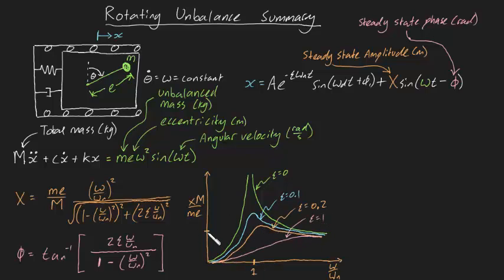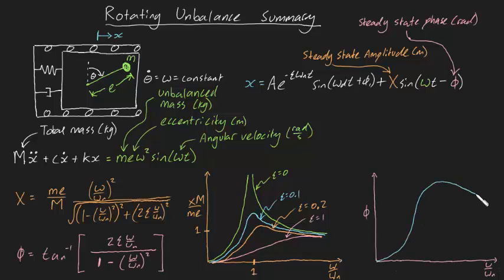The steady-state phase can also be plotted against omega on omega n. This is what the curve looks like for zeta equal to 0.1, 0.5, and 1.